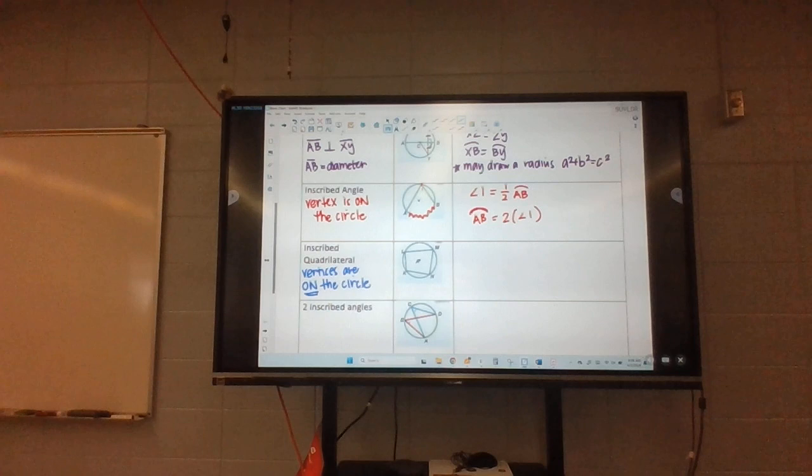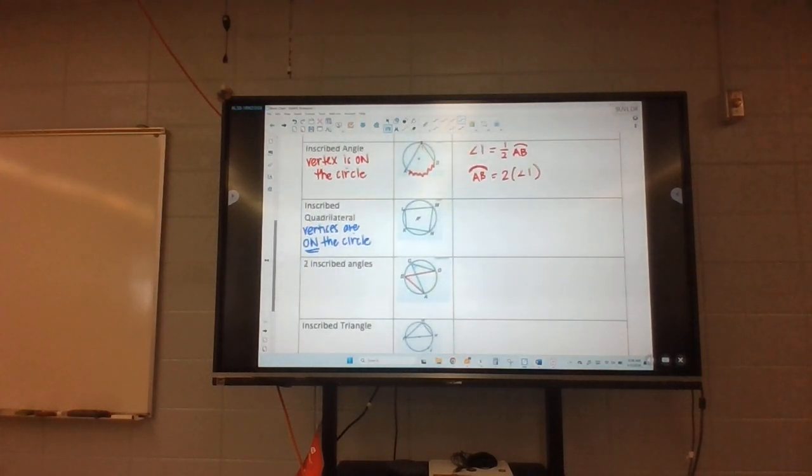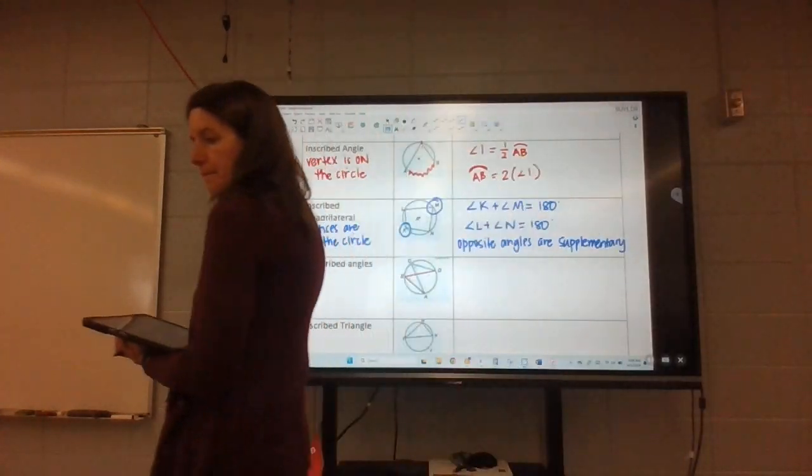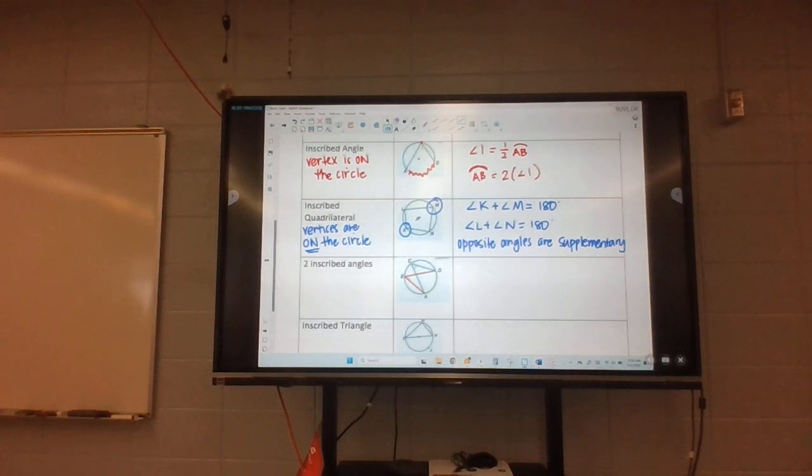So an inscribed quadrilateral, that's where the vertices are on the circle. Now in this case, the angles across from each other are what we call supplementary. They're going to add to 180. Now all of them together do add to 360, but the opposite ones are supplementary. The angles across from each other would equal 180, and that's for an inscribed quadrilateral where all the vertices are right on the circle.